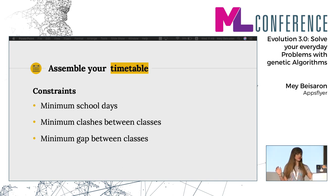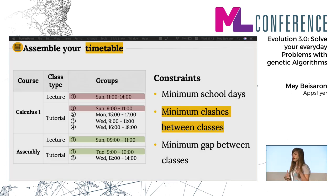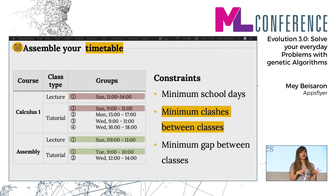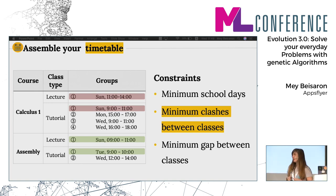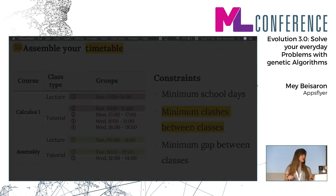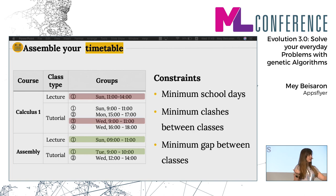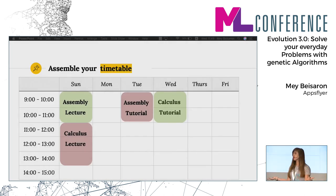Considering those constraints, if I go back to what I chose, I see that I kind of violate the minimum clashes constraint. This is why I went with minimum clashes and not zero clashes — because sometimes I don't care to miss the first hour of something. So if I re-choose and move the calculus tutorial to Wednesday instead of Sunday, this is the first timetable we get. It looks kind of okay, and we don't have any clashes at all.